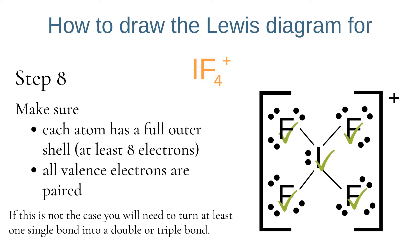Finally we check our Lewis diagram is correct by making sure each atom has a full outer shell of at least 8 electrons and all valence electrons are paired. Each of the 4 fluorines has 3 lone pairs and a bonded pair — 8 in total — so they are stable. Iodine has 4 bonded pairs and 1 lone pair, giving 10 in total, and all valence electrons are in pairs, so this is the correct Lewis diagram.